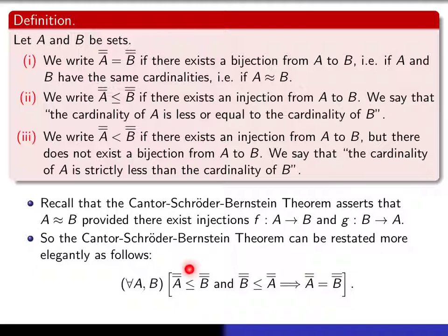Okay, this is just a shorthand for saying that there's an injection from A into B. This is a shorthand for saying there's an injection from B into A, and if one has that, then the Cantor-Schröder-Bernstein theorem says that they have the same cardinality. Now this thing here sort of looks like the statement that has something to do with a certain relation being anti-symmetric, namely this relation here being anti-symmetric. So that suggests the following theorem, that the relation less than or equal to is actually a partial order.